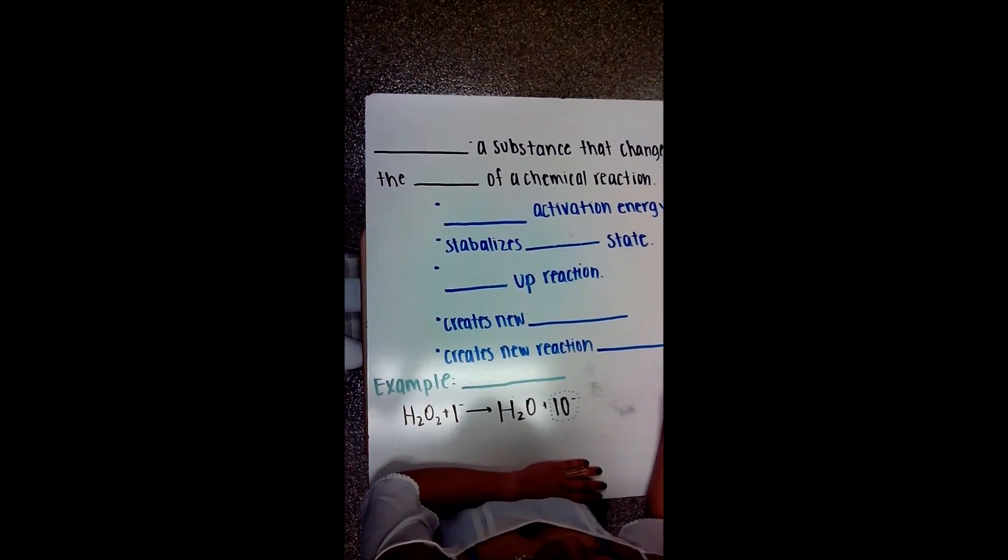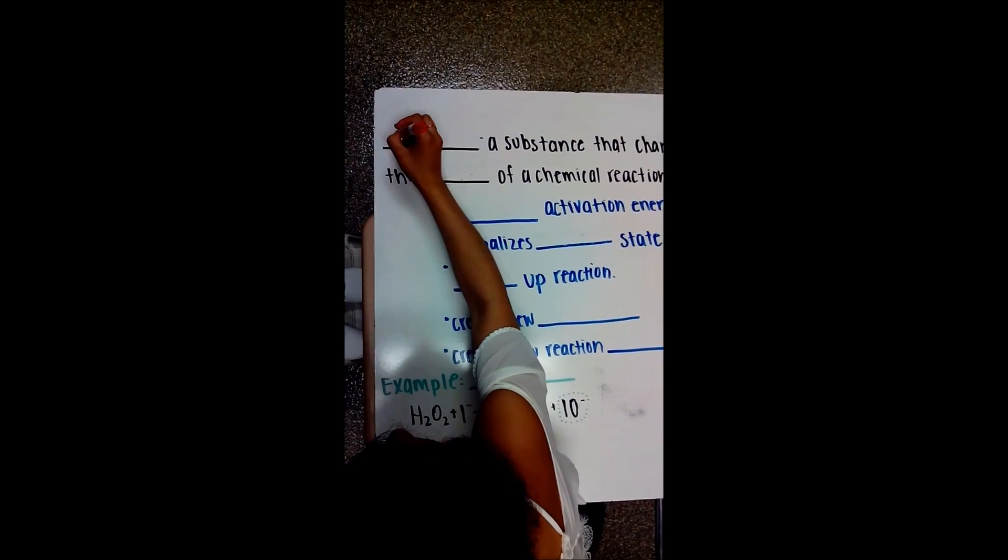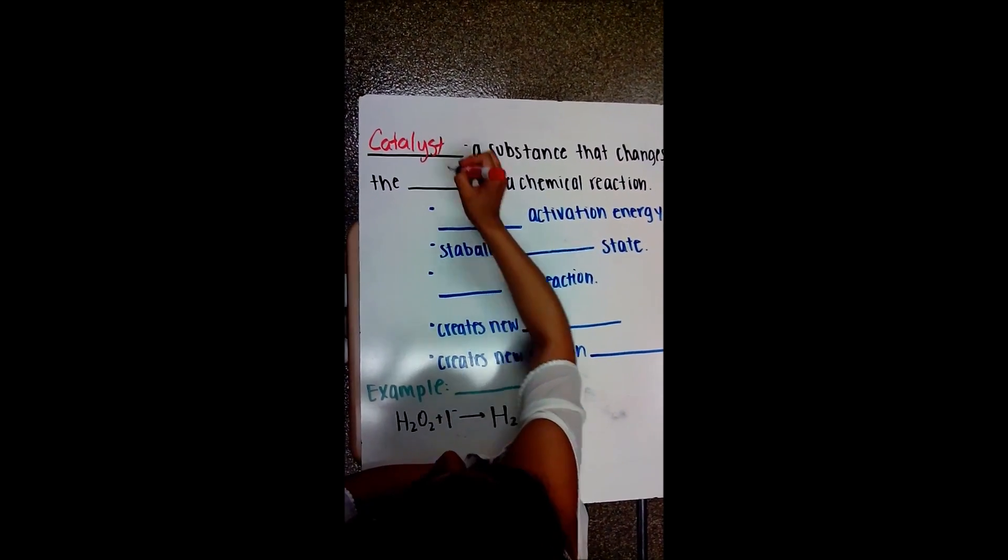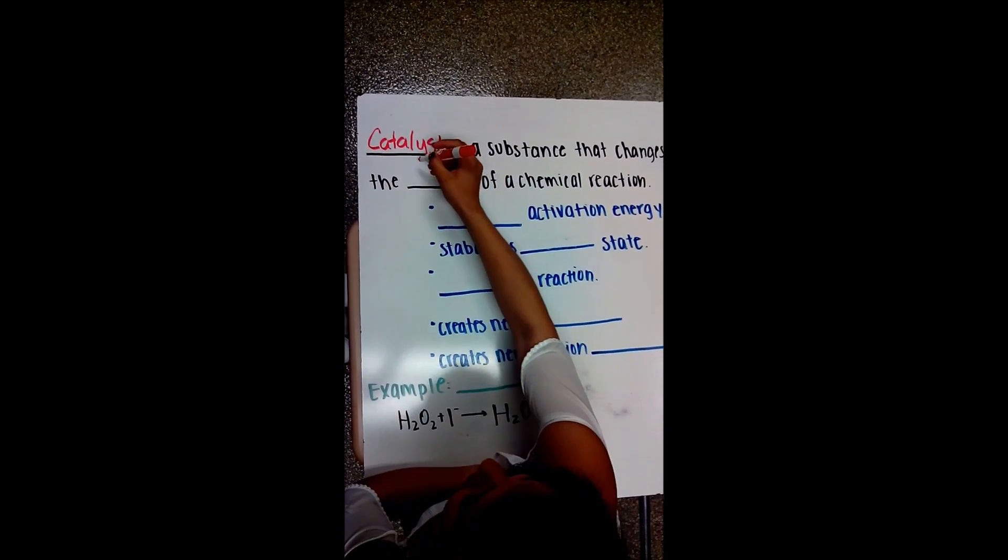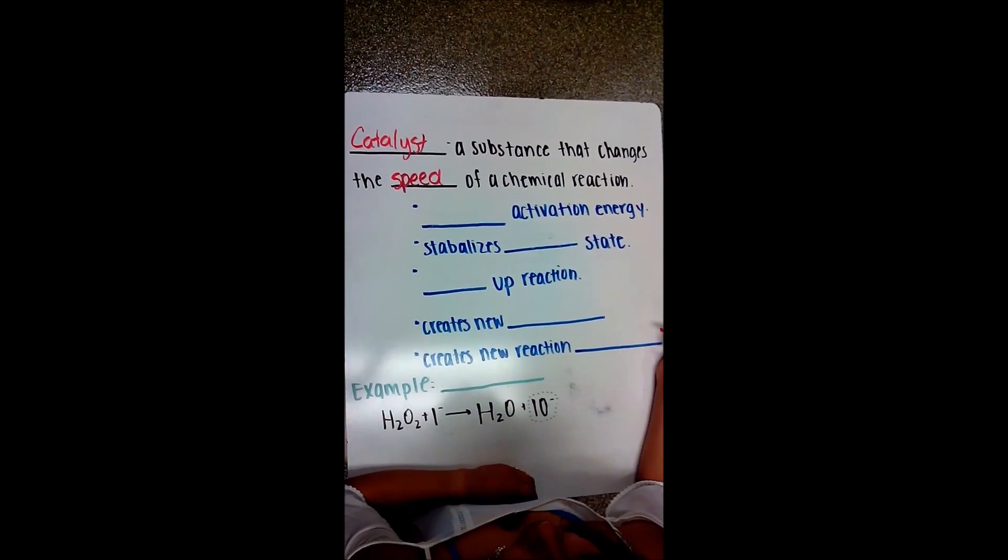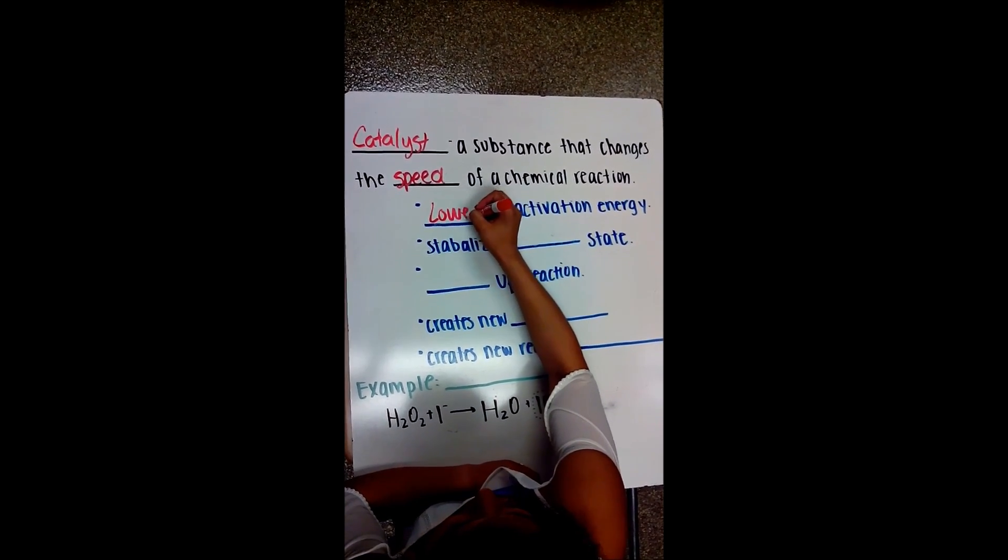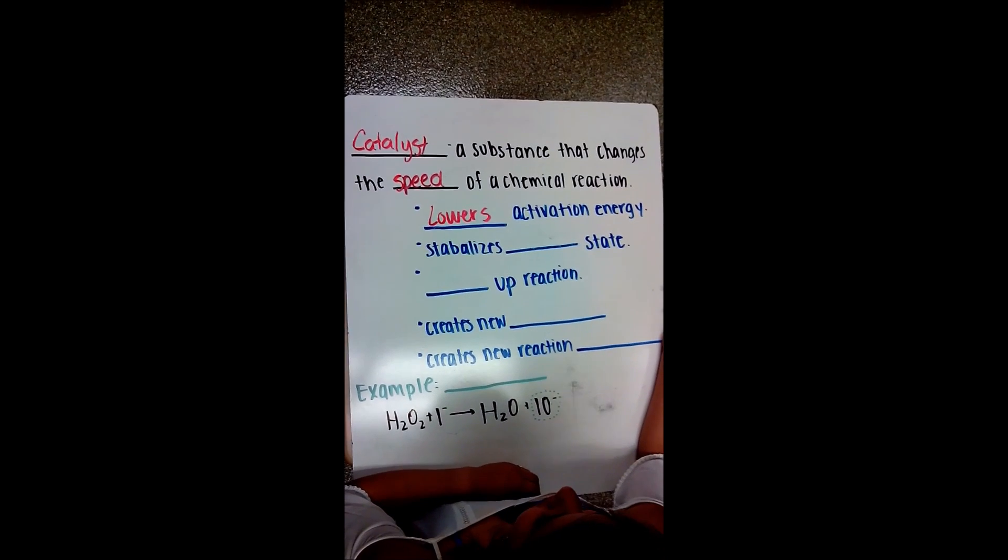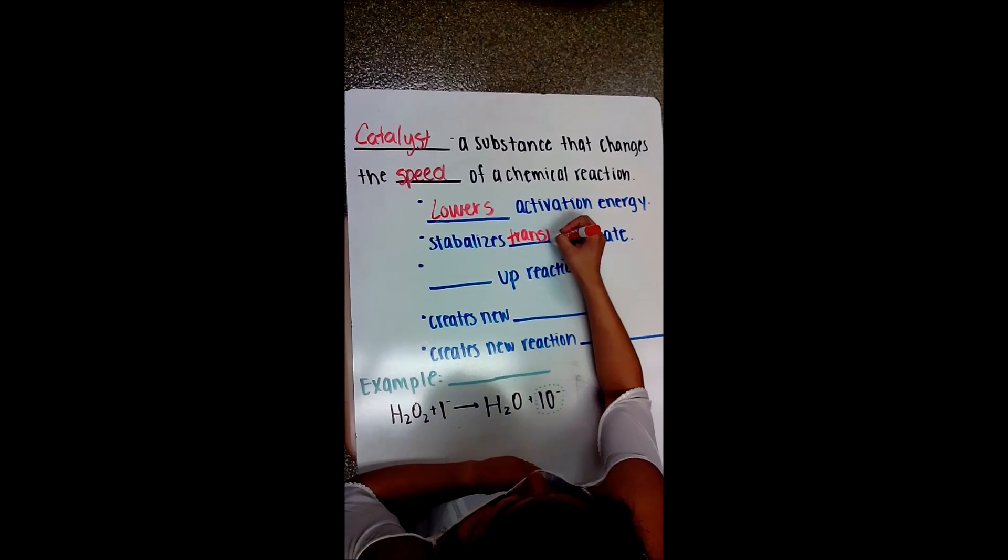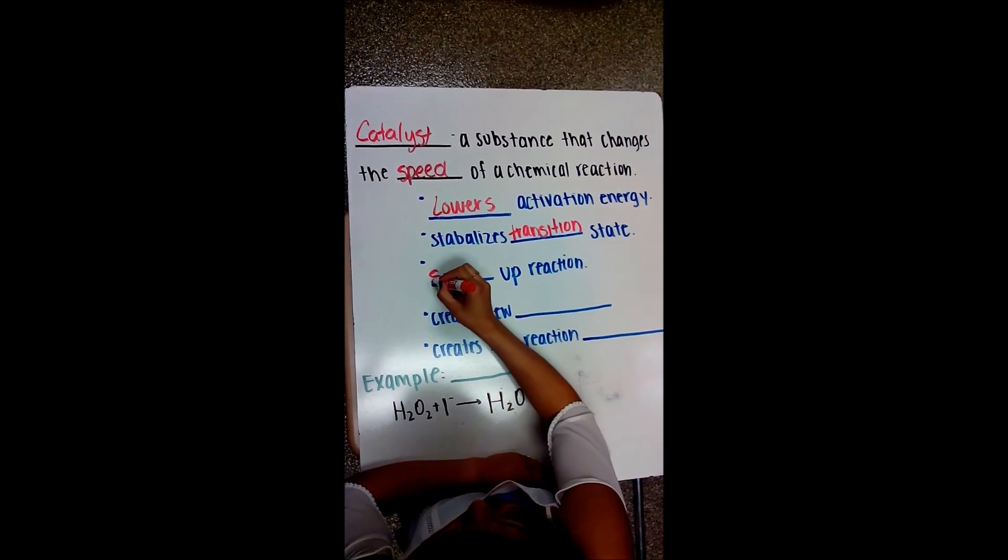Today we'll be learning about types of catalysts. A catalyst is a substance that changes the speed of a chemical reaction. The catalyst lowers the activation energy, it stabilizes the transition state, and it speeds up reactions.